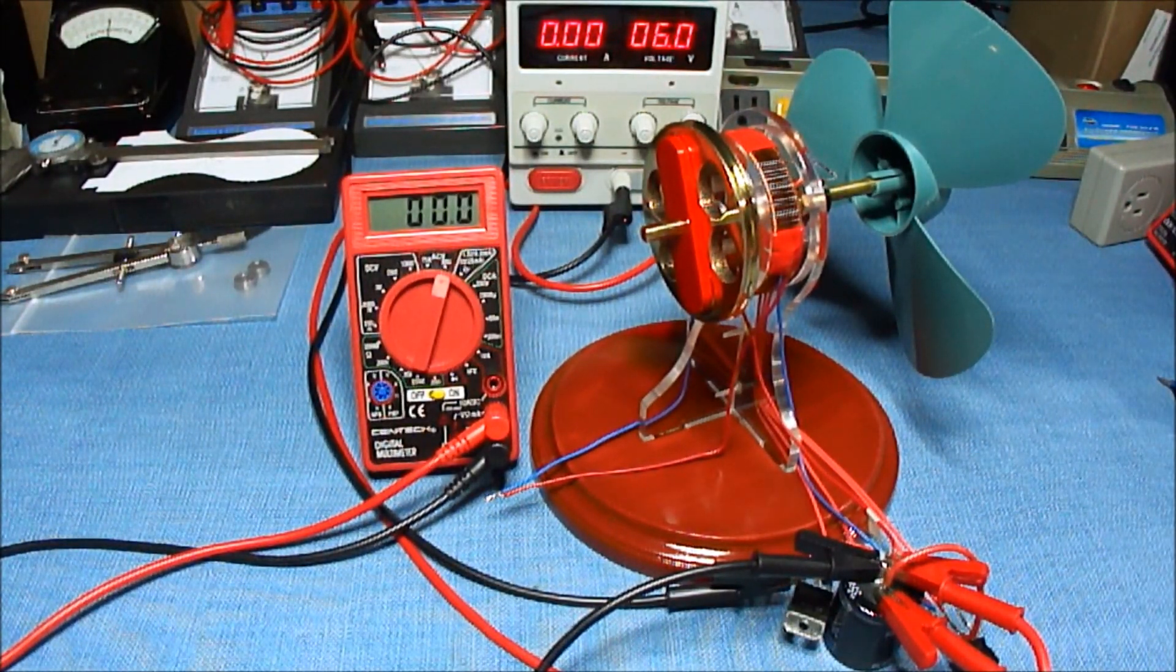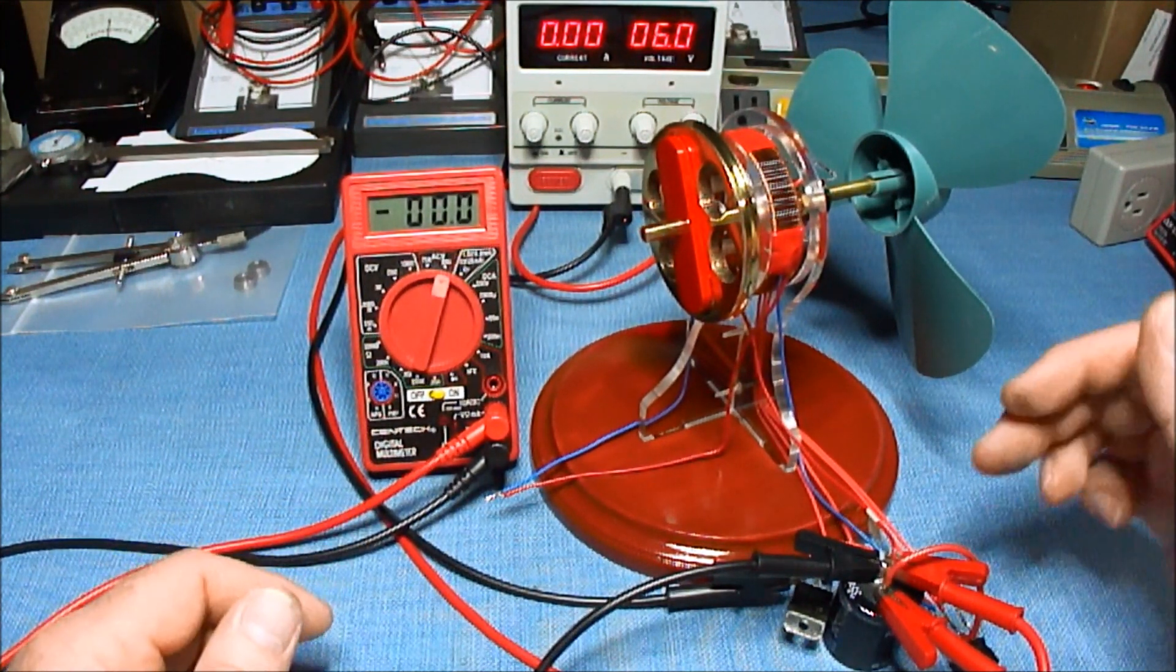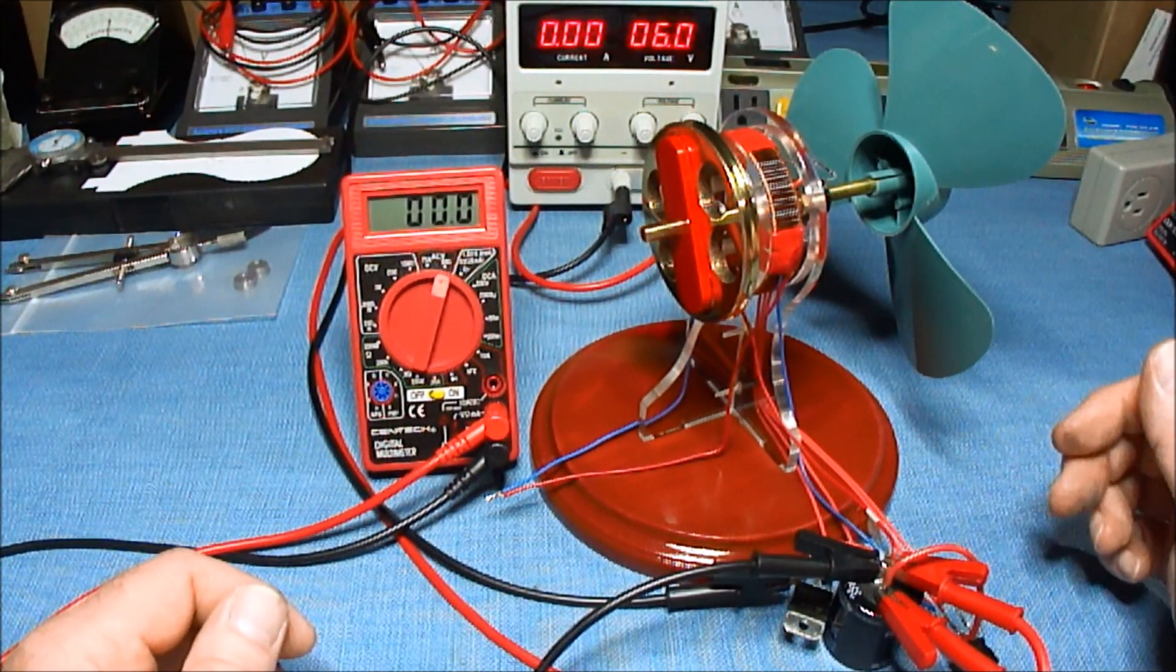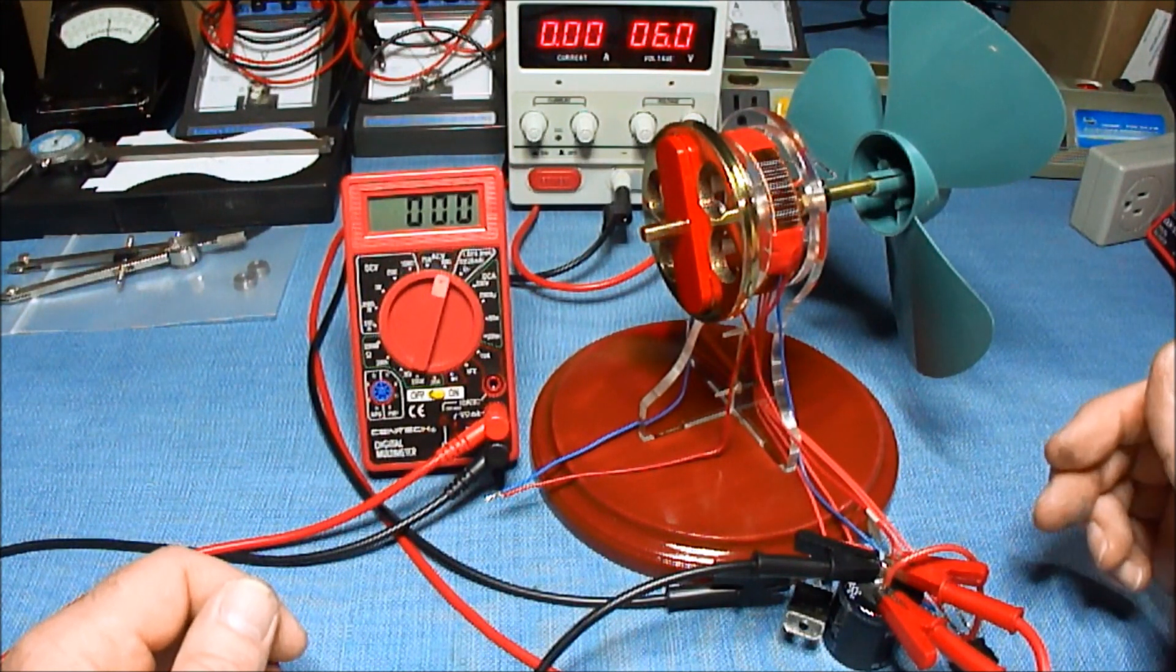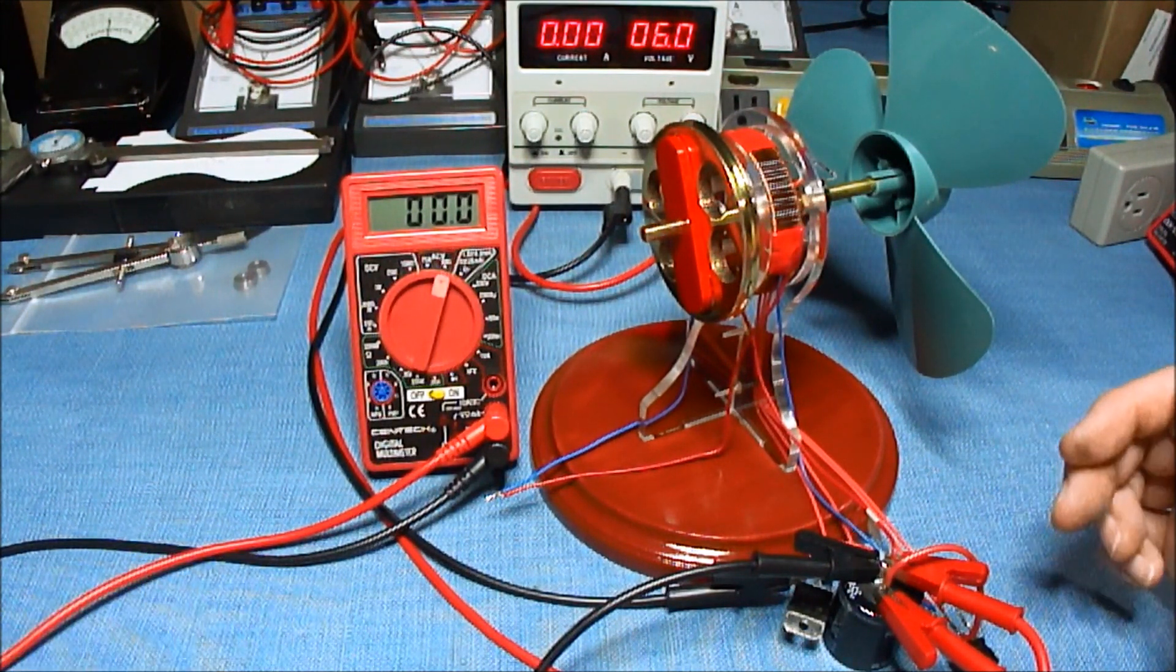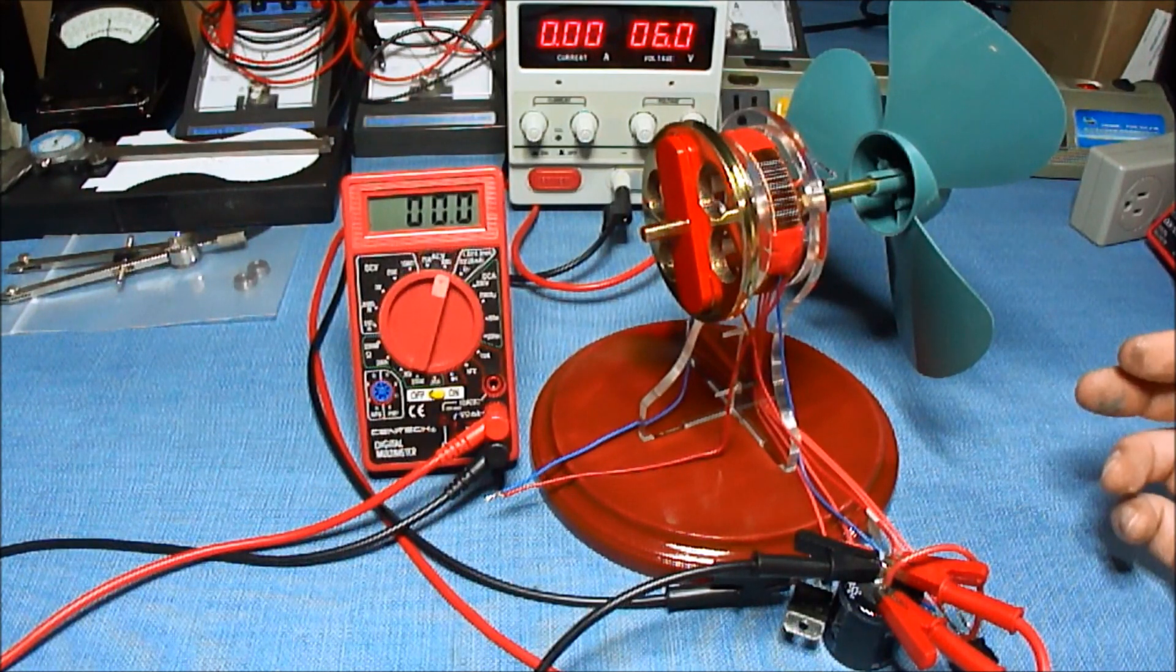I have a voltmeter here connected across the capacitor, and I have it set to AC volts. So when I switch this over to the two pulse, we can have a look at the voltage in AC.